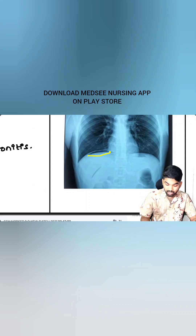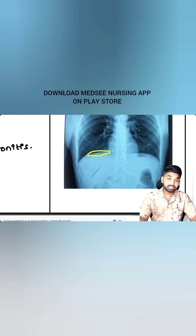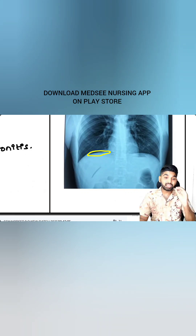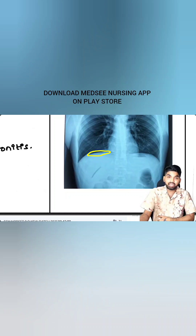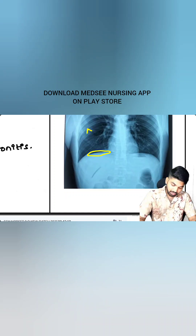Can you see this dark area under the right side of the diaphragm? This is air getting collected under the right hemidiaphragm — air under the right hemidiaphragm.